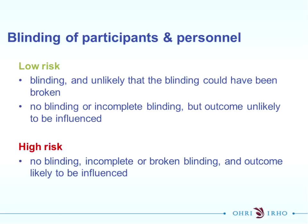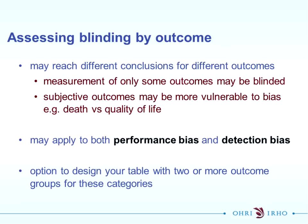It's also important to consider that even if blinding is not feasible for the intervention - the example again of the surgical trial - there's still a potential for risk of bias. Just because they can't blind the surgical intervention, it doesn't mean that the potential for bias doesn't exist. For performance bias, low risk of bias means that blinding occurred and it's unlikely that blinding could have been broken, or that there are very objective outcomes.